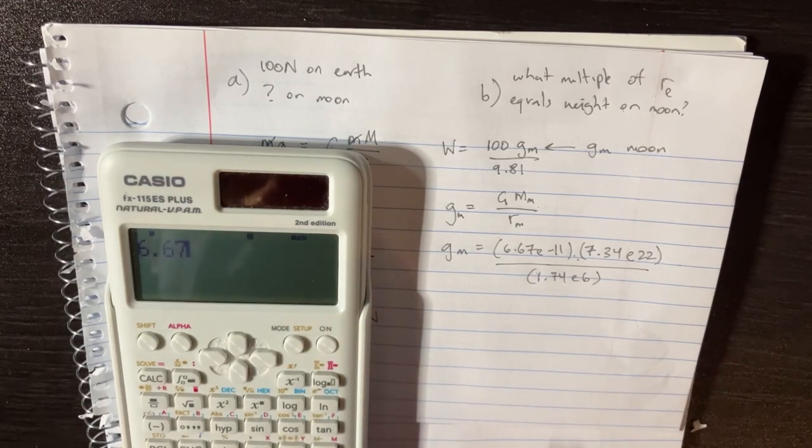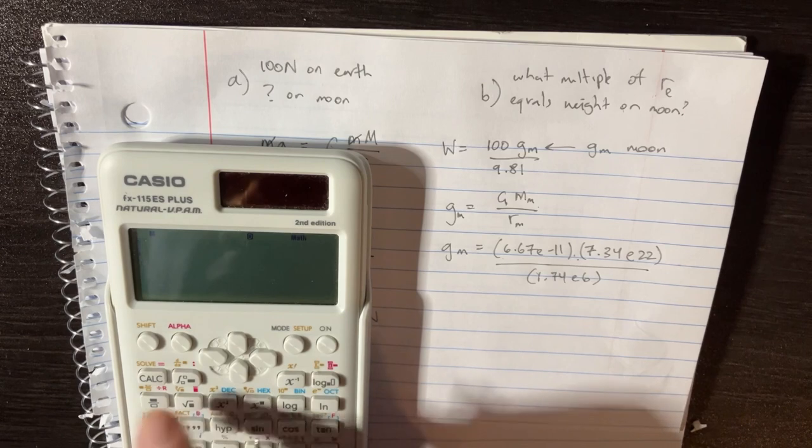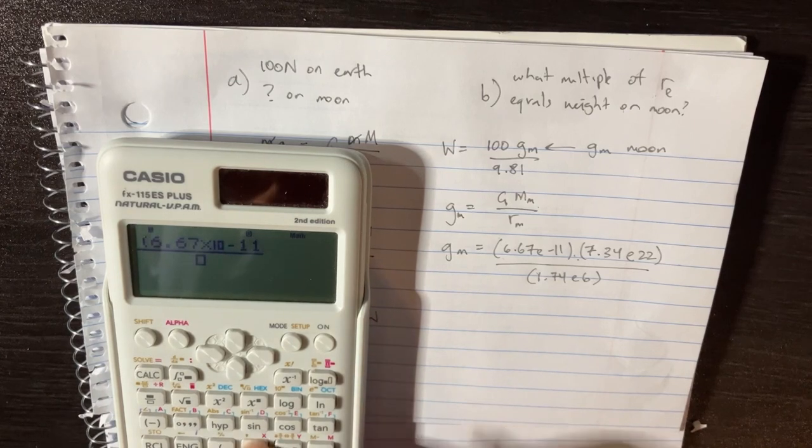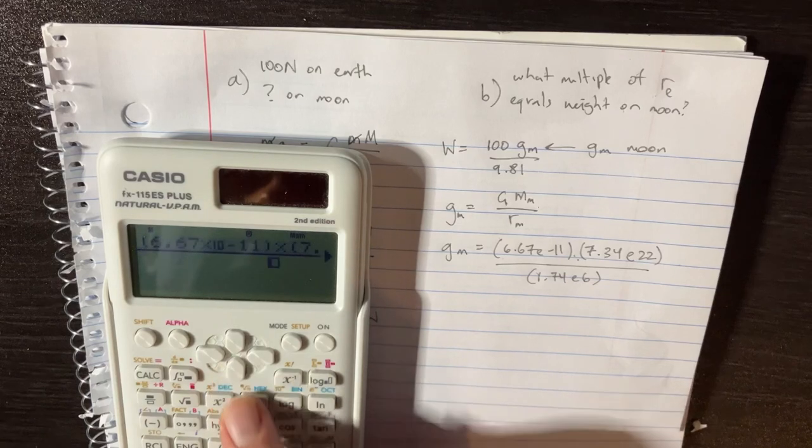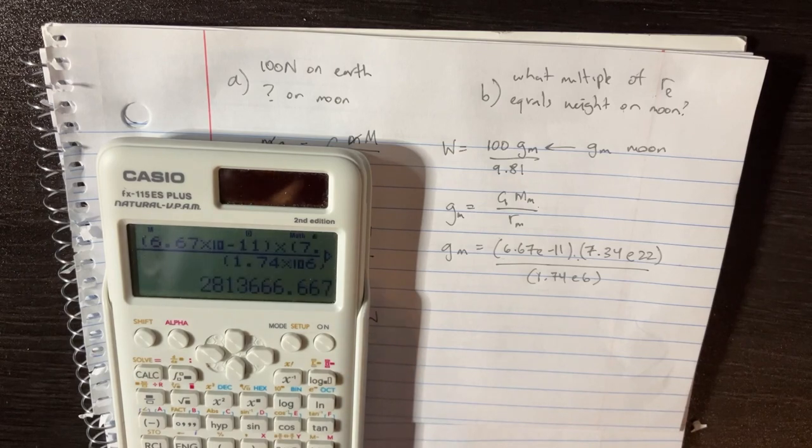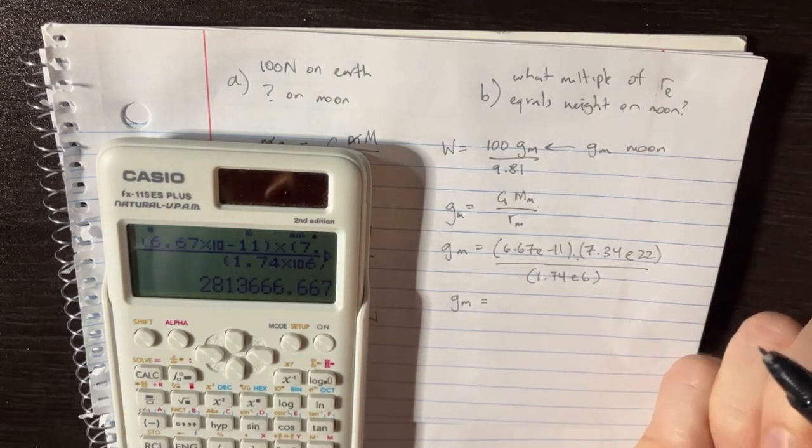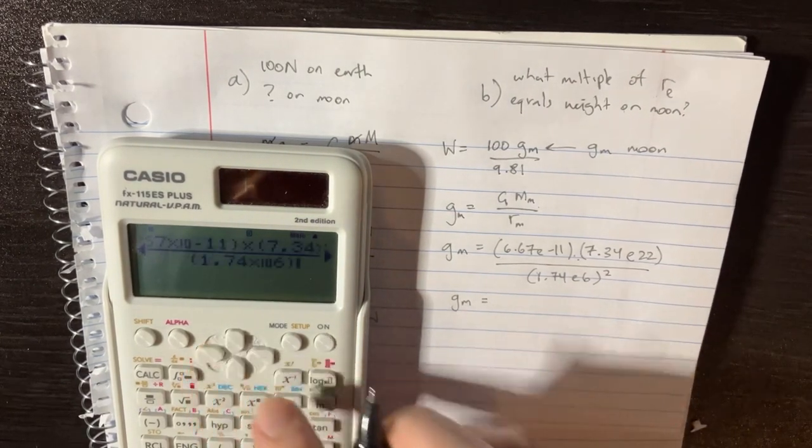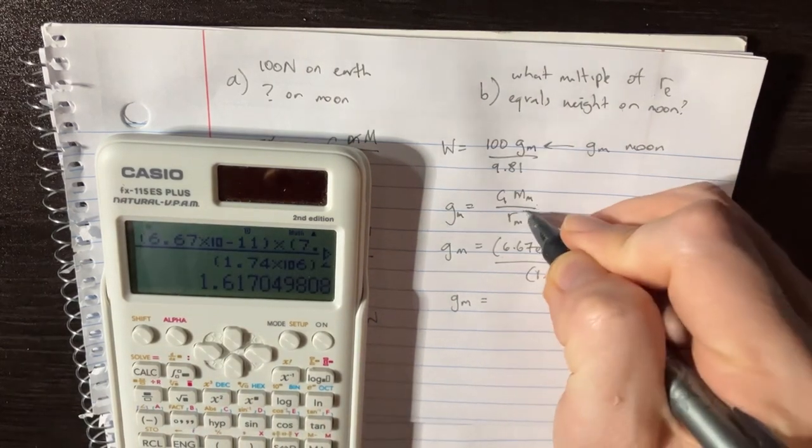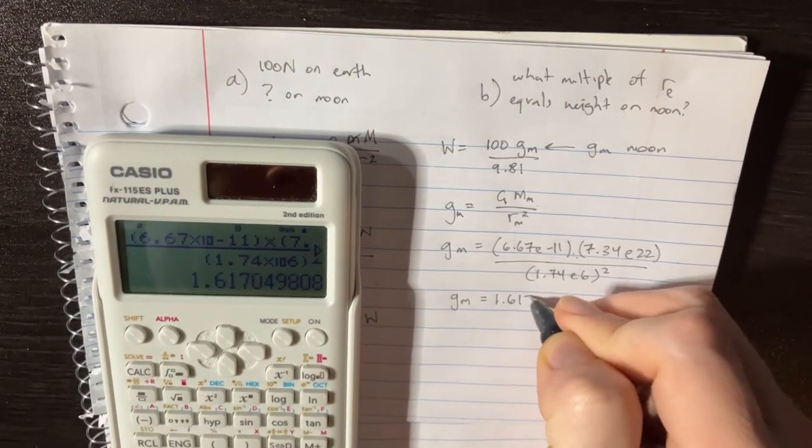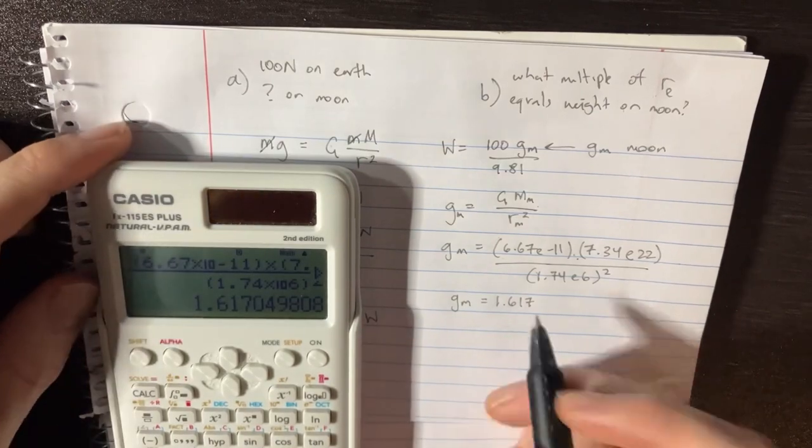So I'll just go ahead and put that in our calculator. 6.67 e to the negative 11 times 7.34 e to the 22, divide that by 1.74 e to the 6. And then we're gonna get g_m is equal to... Oh, this is squared, that's right. I'm gonna square that. Don't want to forget that square there. Okay, great. So 1.617 is gonna be g_m.